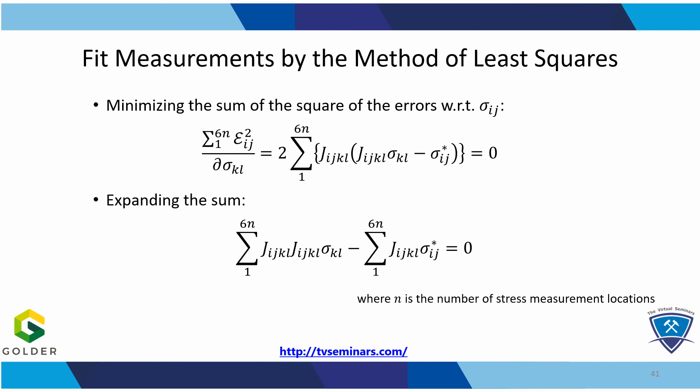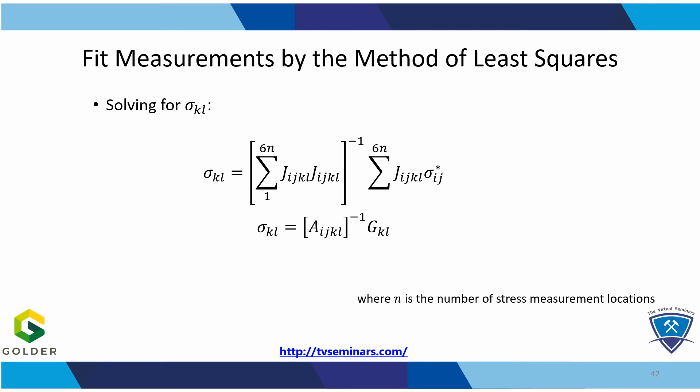The next step in the method of least squares is to minimize the sum of the errors. This is done by differentiating the sum of the error with respect to the variable of interest — in this case our estimate of the original stress tensor sigma_KL — and then equating that differentiated expression to zero. We end up with the expression at the bottom of the screen after expanding the sums. All we have left to do now is to solve for sigma_KL. Let's call the first matrix A_ijkl — that expression in square brackets represents the product of the transpose J matrix by the J matrix itself. The J matrix had dimensions of 6n by 6, so the product of the transpose by itself results in a 6 by 6 matrix. Similarly, the product of the transpose of J by the array of in-situ stress measurements results in a 6 by 1 matrix — let's call that matrix G_KL.